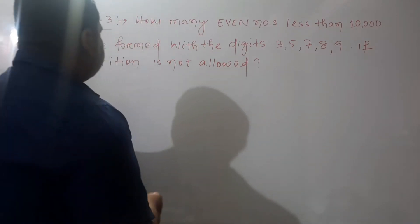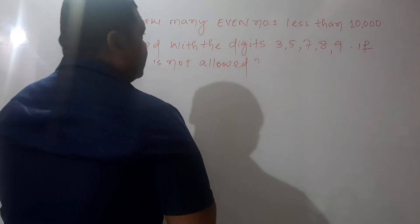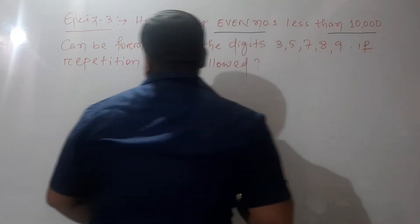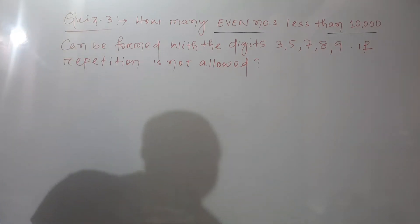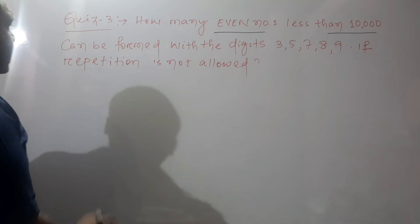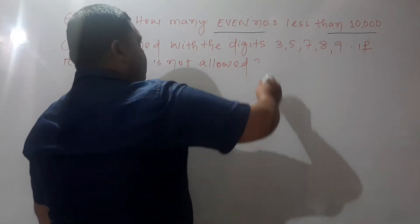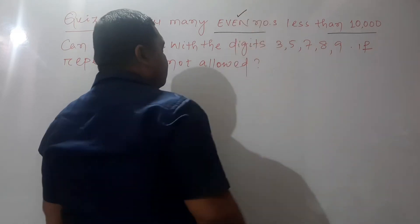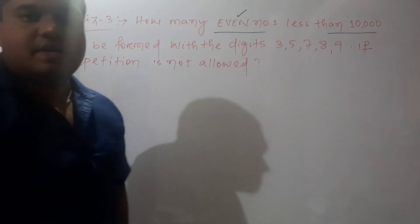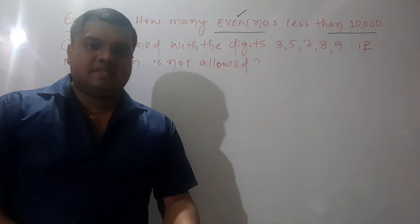How many even numbers less than ten thousand can be formed with the digits 3, 5, 7, 8, and 9 if repetition is not allowed? Here you have to form an even number which is less than ten thousand, meaning the desired numbers may be four-digit, three-digit, two-digit, or one-digit numbers.